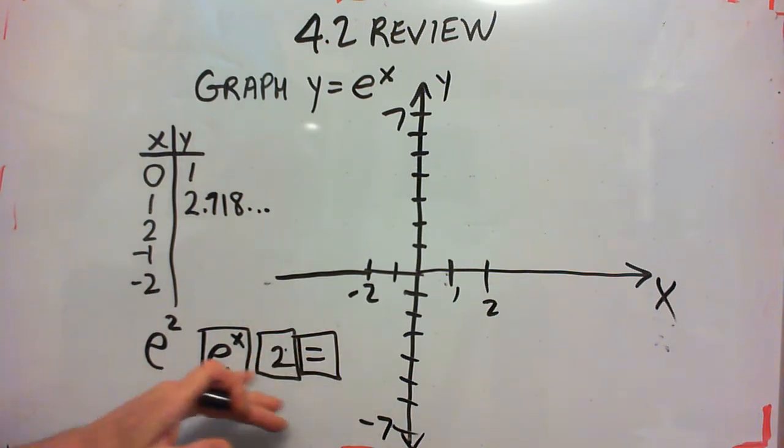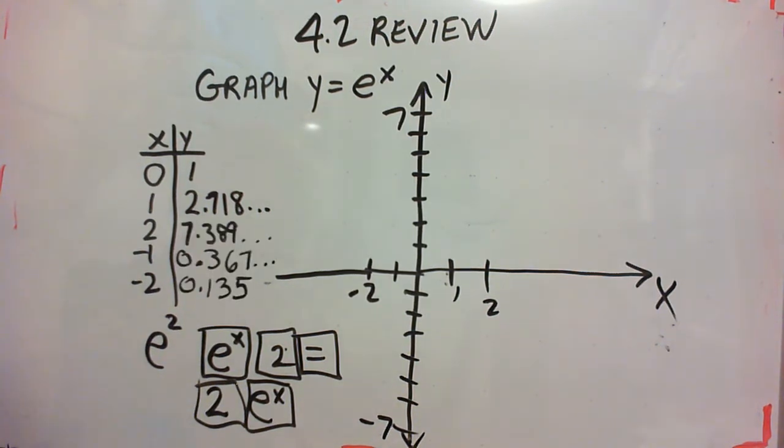On most calculators, that's how you do it. Some calculators, you put the exponent in first, and then e to the x. Now e to the x is always a second function. You're going to have to use a second function key on your calculator to get this.